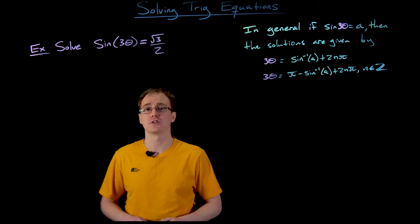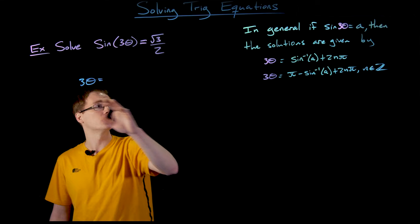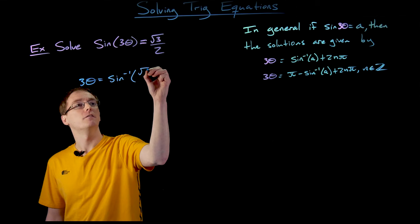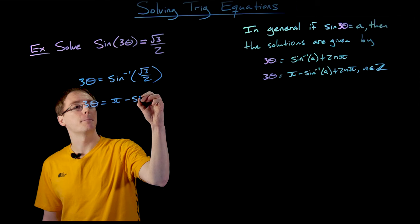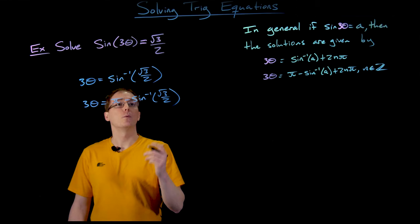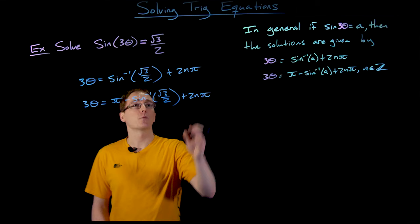Our first solution is found by taking sine inverse of each side of our equation. Taking sine inverse of the left-hand side just gives us 3 theta, equal to sine inverse of the square root of 3 over 2. Our other solution from the general sine inverse process is pi minus our first solution — so that's pi minus sine inverse of the square root of 3 over 2 — and then we add any integer multiple of the period. These are the general solutions for our input 3 theta.